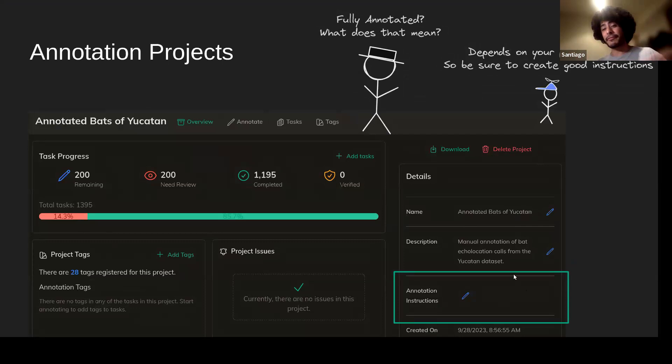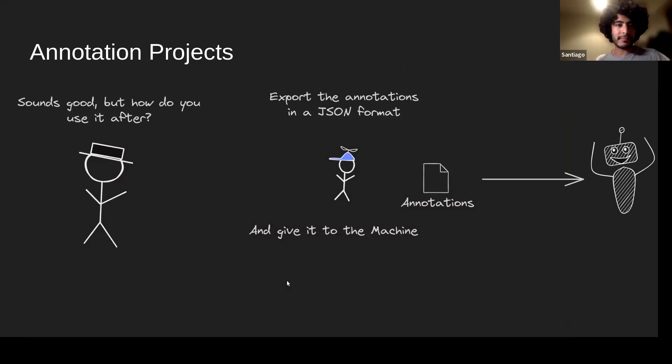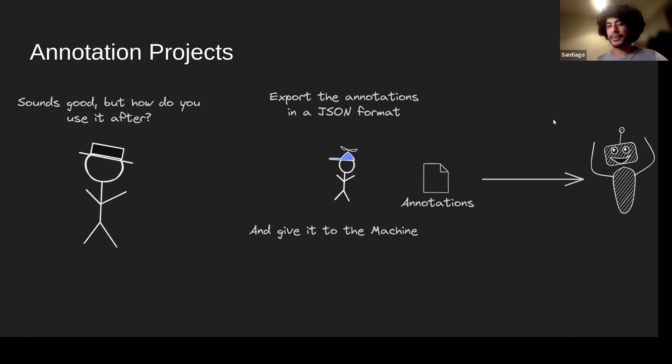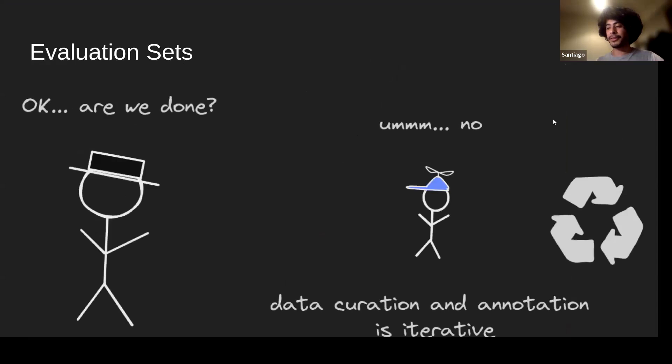Please do create good instructions for your annotators so the task is clear. The dashboard shows progress: how many tasks are remaining, how many in review, any issues. You can export these annotations into a JSON-based format to give to the machine. We're currently developing with colleagues a training framework that can use these annotations and output a trained model — that is coming out soon as well.